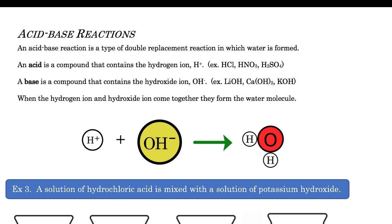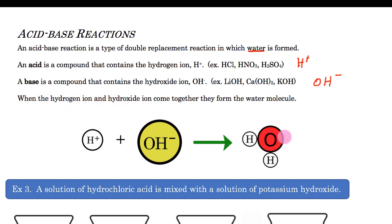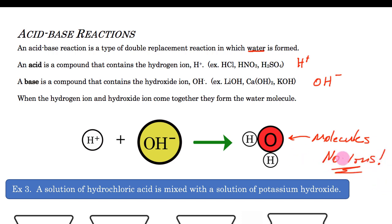Now let's look at acid-base reactions — these are very similar, with just one change: instead of forming a solid, we form water. Acids produce hydrogen ions — HCl, nitric acid, and sulfuric acid all have that hydrogen ion. Bases are compounds that have the hydroxide ion, the OH⁻ ion — like lithium hydroxide, calcium hydroxide, potassium hydroxide. When the hydroxide ion and hydrogen ion come together, they form water. Water is a molecule made up of two non-metals, so there are no ions anymore — we've removed that ionic property.